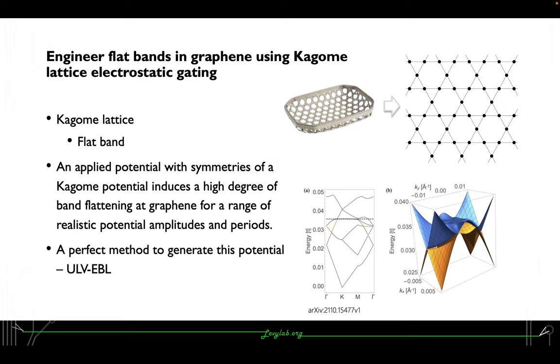This is exciting because we don't need to twist the graphene or use bilayer graphene. With a monolayer graphene and an applied potential as Kagome lattice, it's possible to see the flat band and furthermore probably superconductivity. I would like to introduce a perfect method to generate this potential in my later talks, which is called ultra-low voltage electron beam lithography.